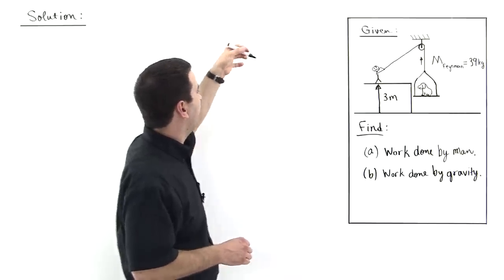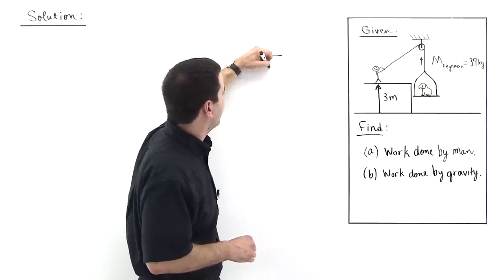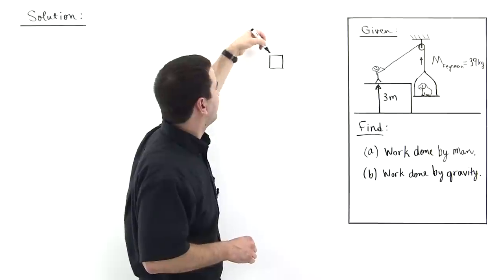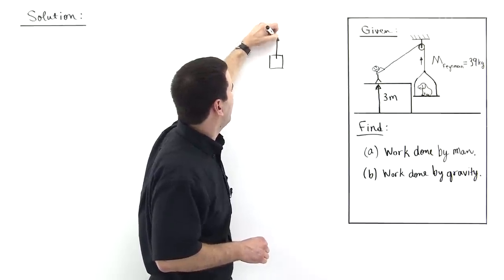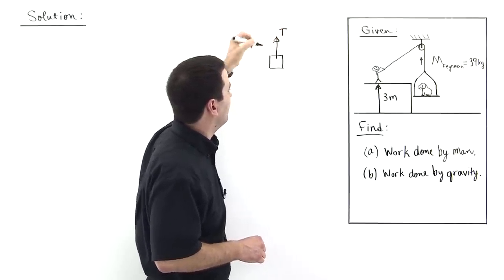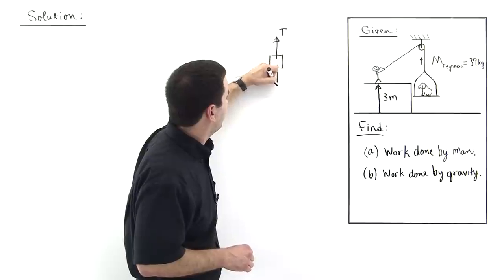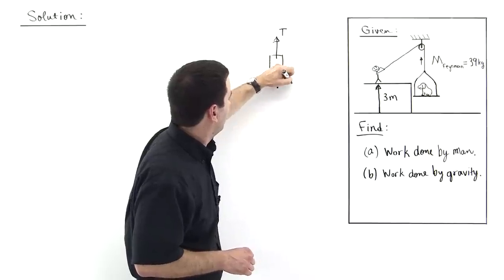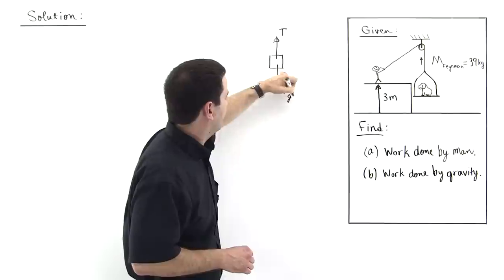Okay, so let's draw the free body diagram of Feynman. We'll draw him as a box like this. And so we see that there's the tension that's pulling Feynman up like so, and also there's the force due to gravity pulling down like this.